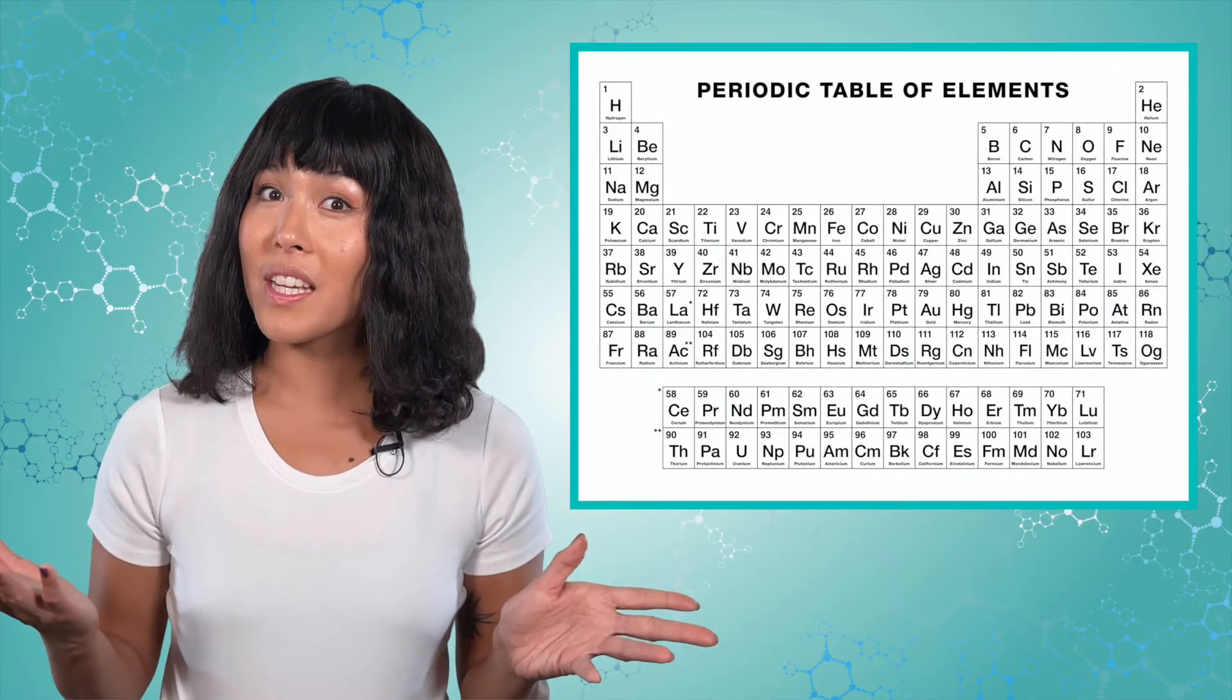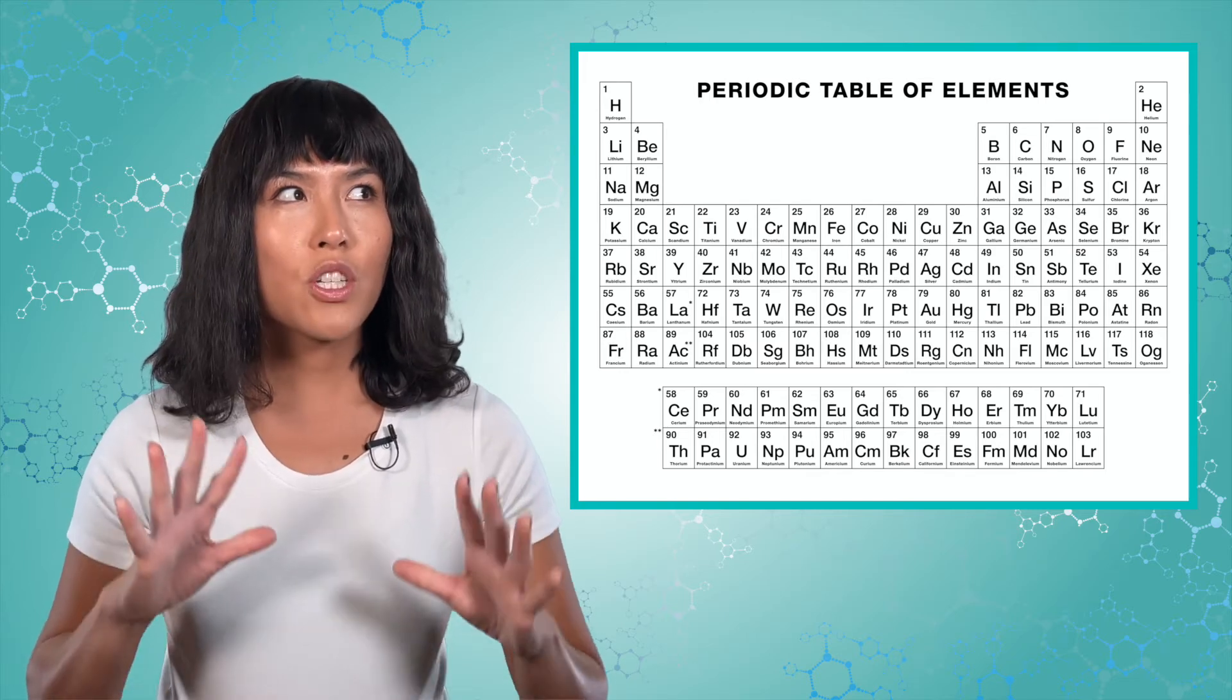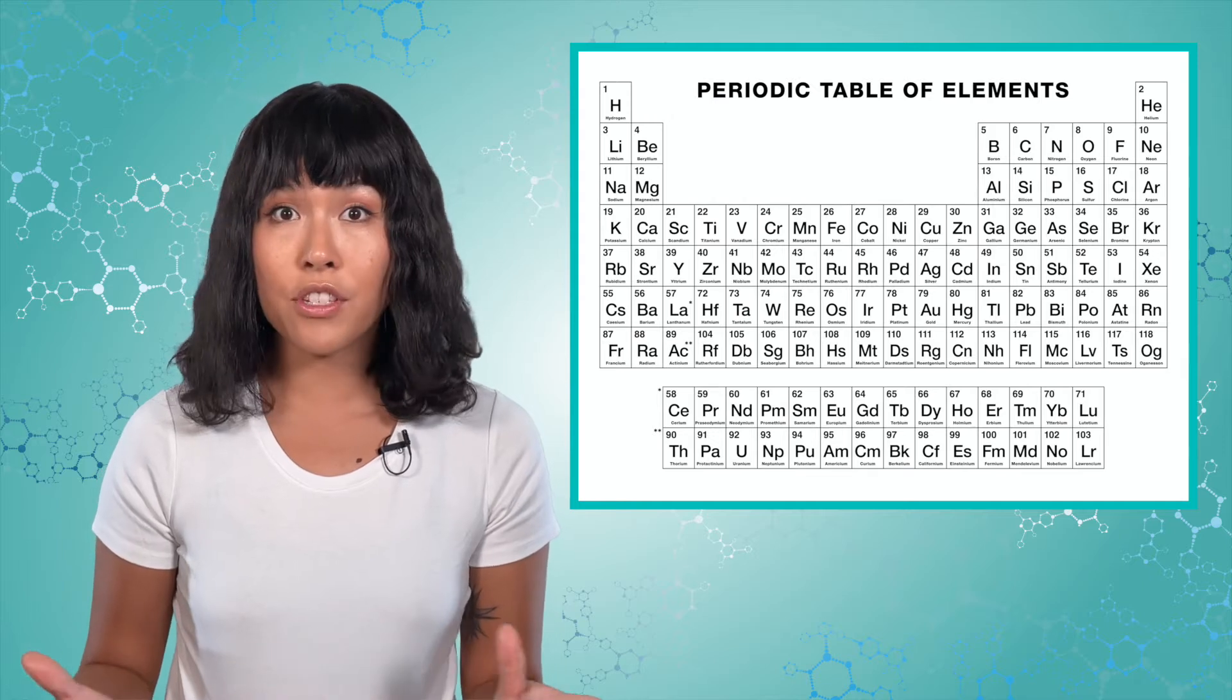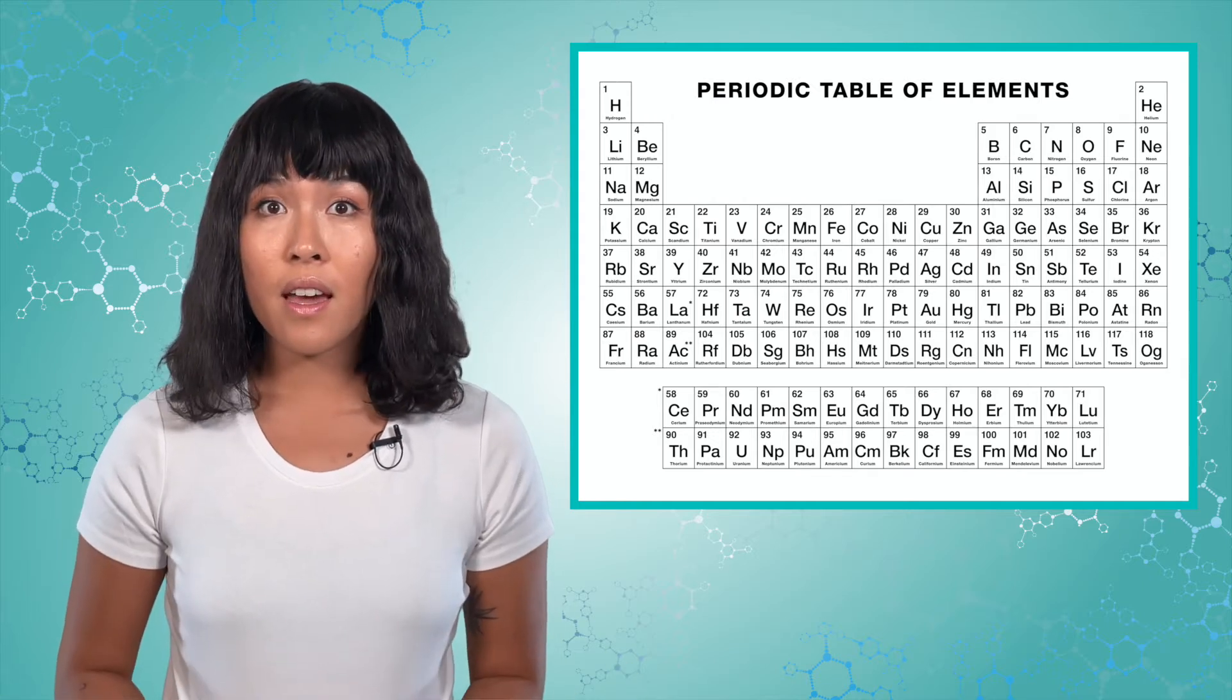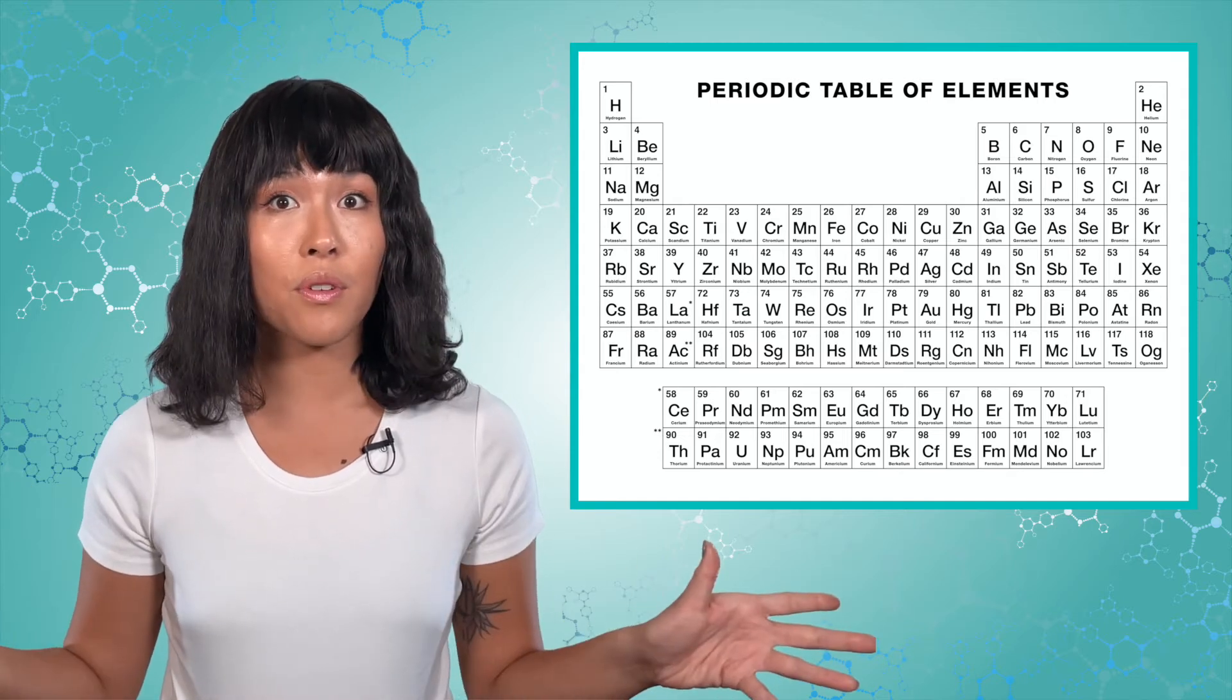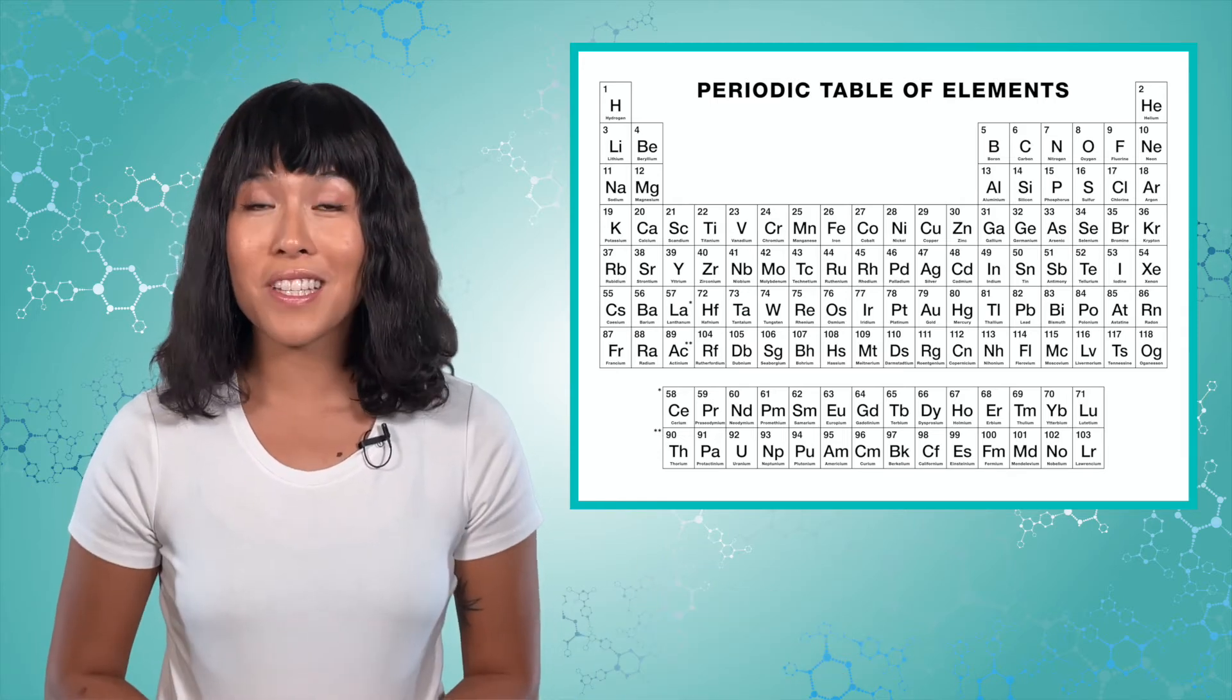I bet you've seen this before. It's the periodic table of the elements. But what do all of these rectangles represent? And what do they have to do with living things? And what's the relationship between elements, atoms, molecules, and life? By the end of Unit 2, you'll have answers to these questions.